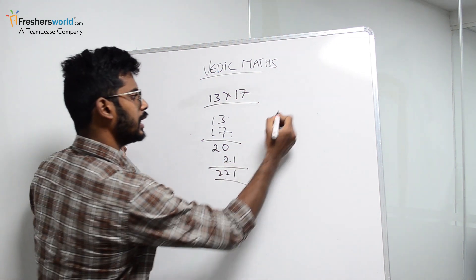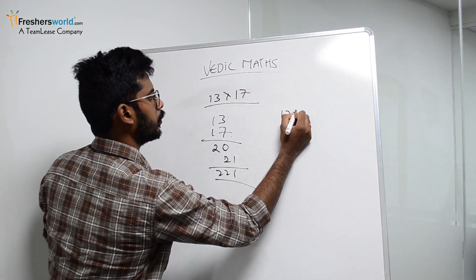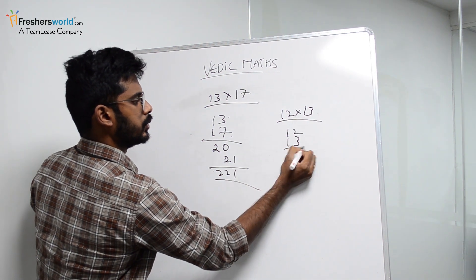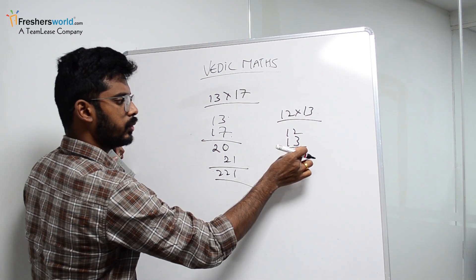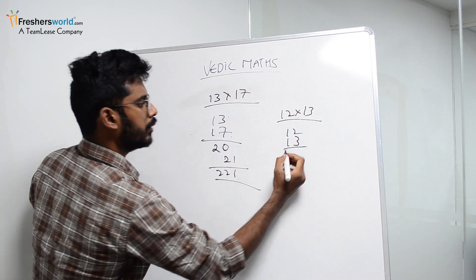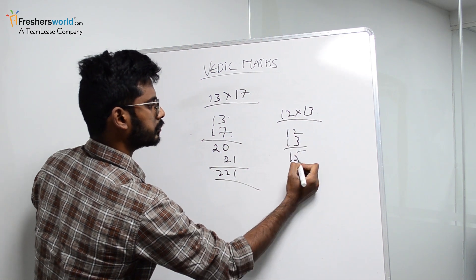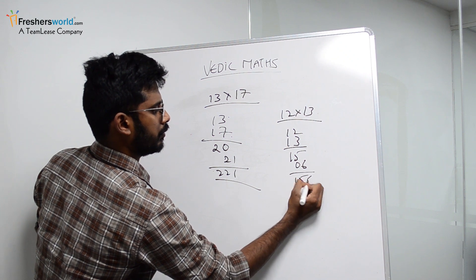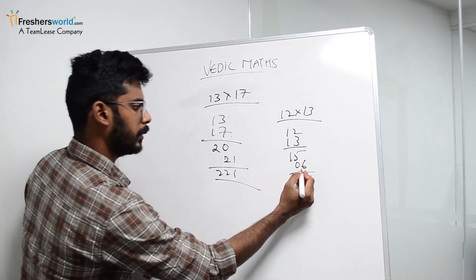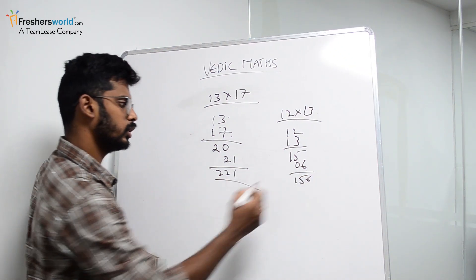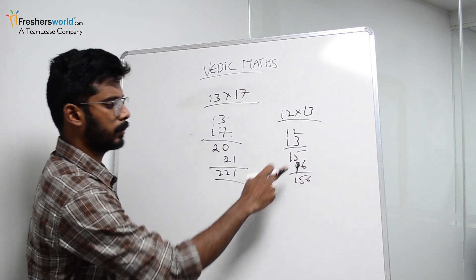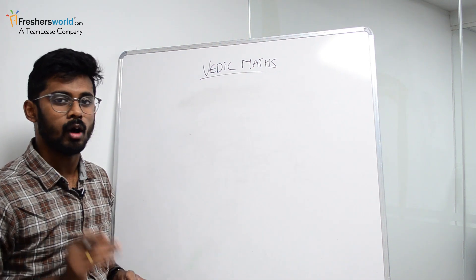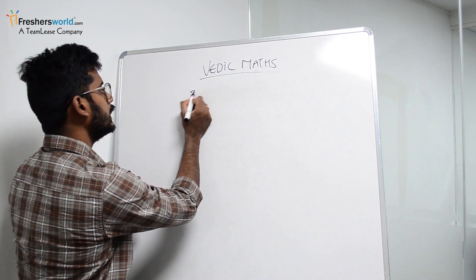Take another example: 12 into 13. Do 12 plus 3 or 13 plus 2, which gives 15. Then 2 into 3 is 6 — write as 06 since it's a single digit. So the answer is 156. If the product of the units digits is a single digit, write a zero in front.